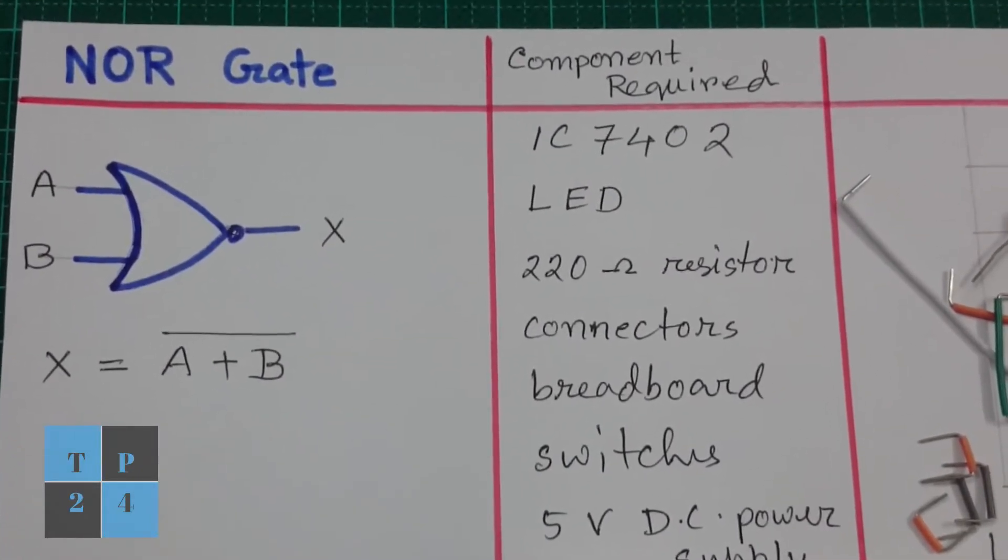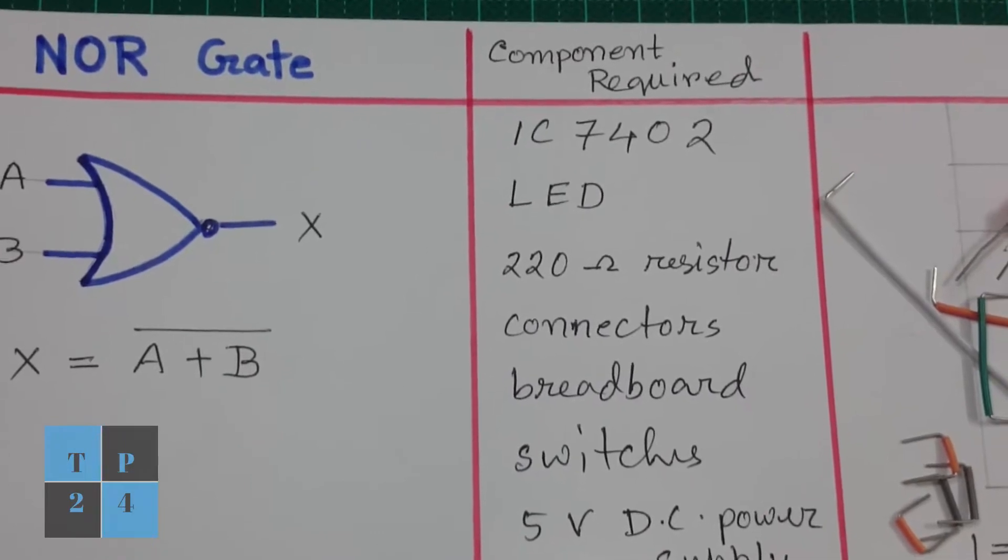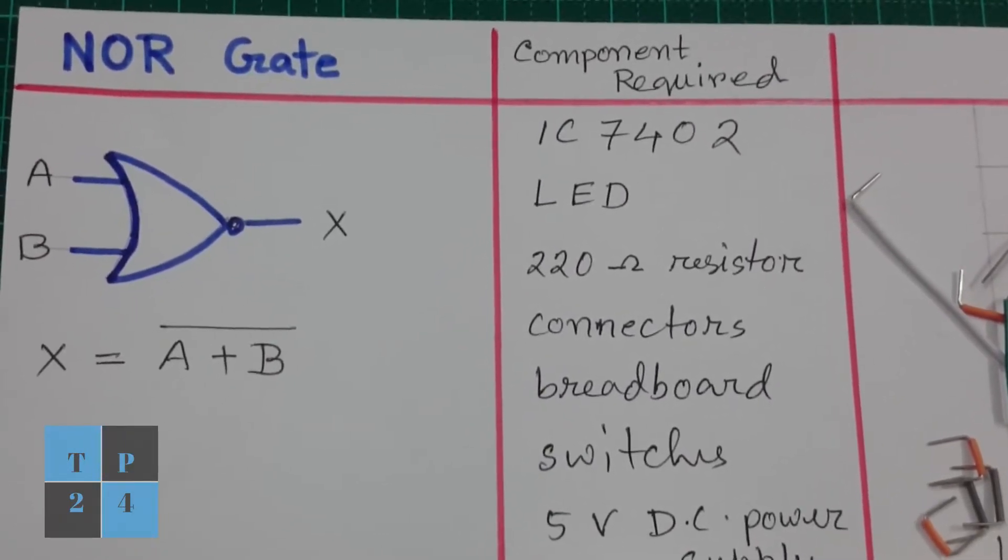The basic element of digital systems is logic gates. We will study different logic gates and their input-output operational behavior. Today I will explain the NOR gate.